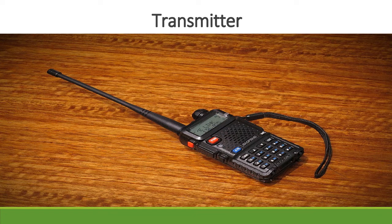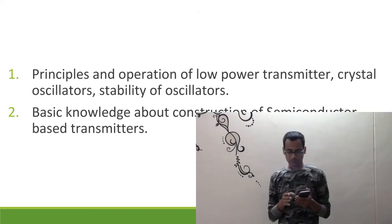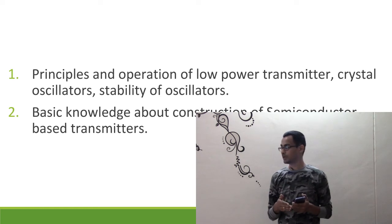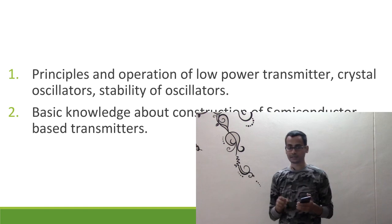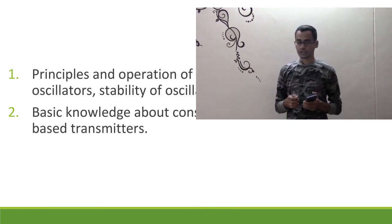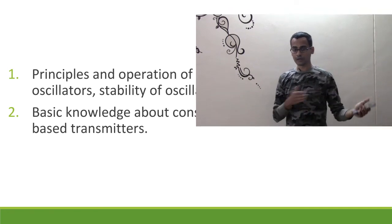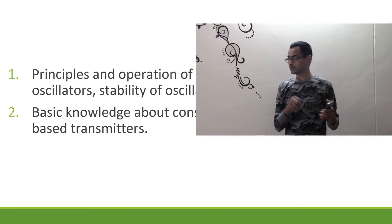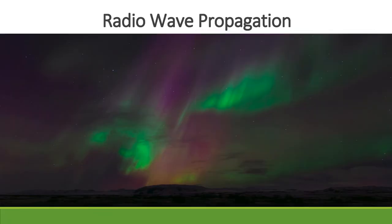Then we come to the next portion of the radio transceiver: the transmitter. We learn how to build a very simple transmitter and the circuits which make up simple low-power transmitters. Then we cover crystal oscillators, stability of oscillators, and how that impacts your transmitter's performance. We also get basic knowledge about the construction of semiconductor-based transmitters, utilizing concepts already learned from the semiconductor section.